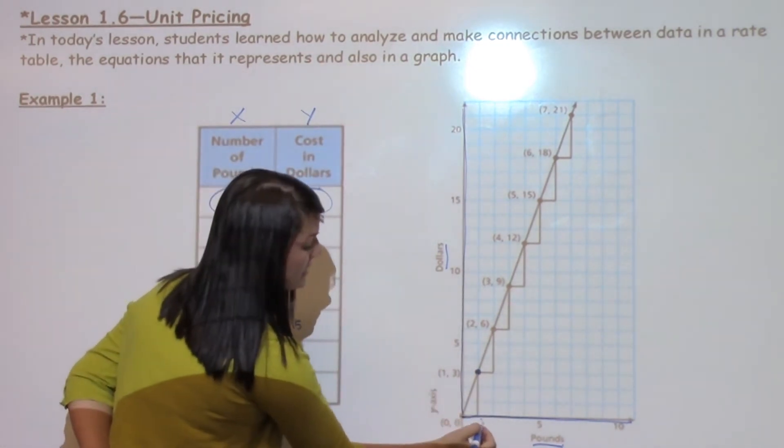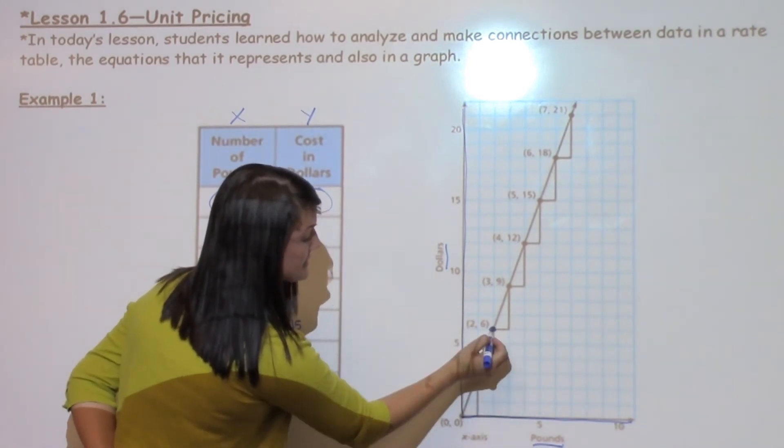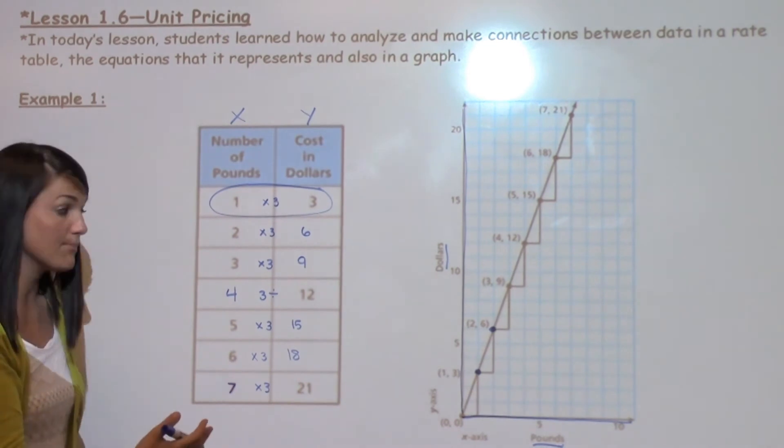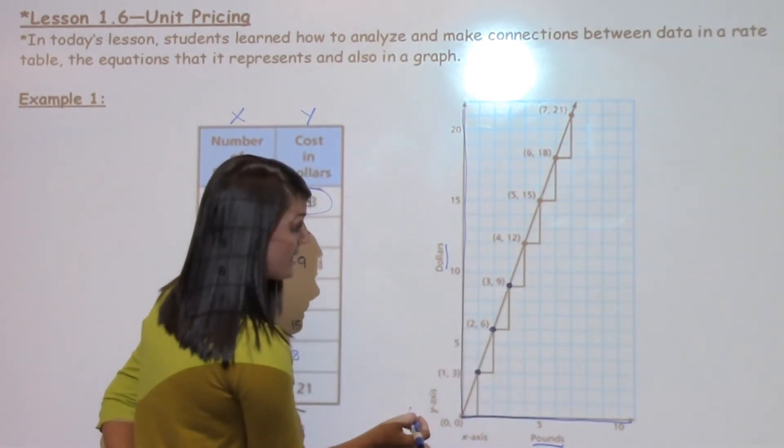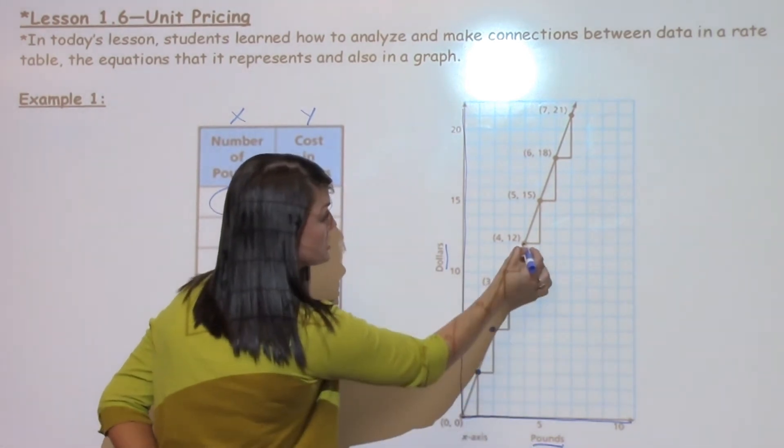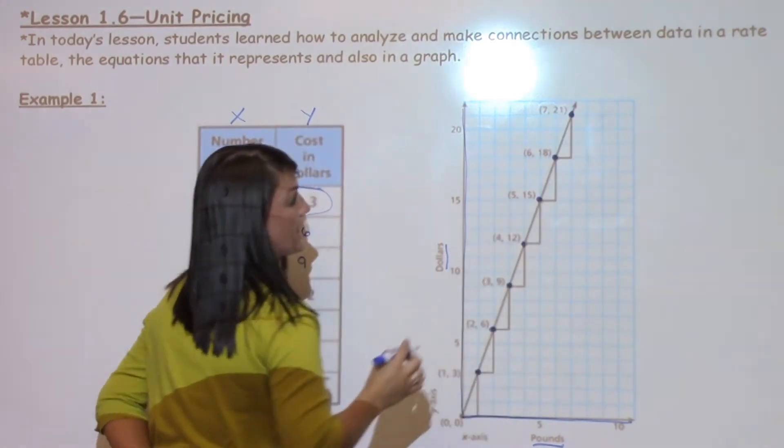And as you continue across, you see 2, 6. I go over 2, up 6, over 2 pounds, up $6. And then I just continue to do that same pattern. Over 3 pounds would mean I would cost $9. 4 pounds would cost $12. 5 pounds would cost $15, and so on, all the way through the chart.